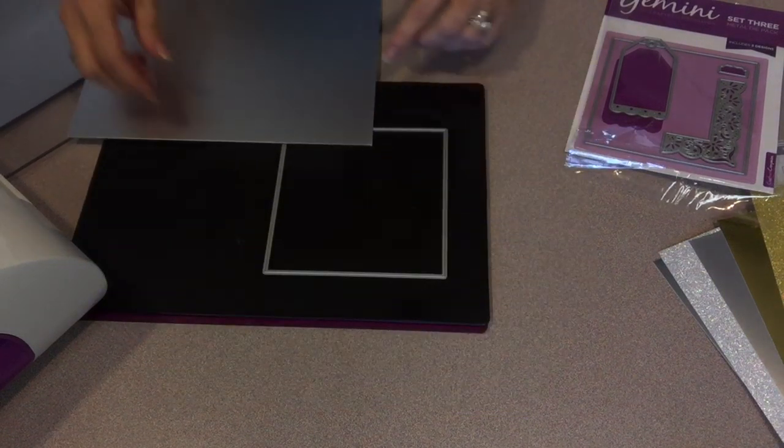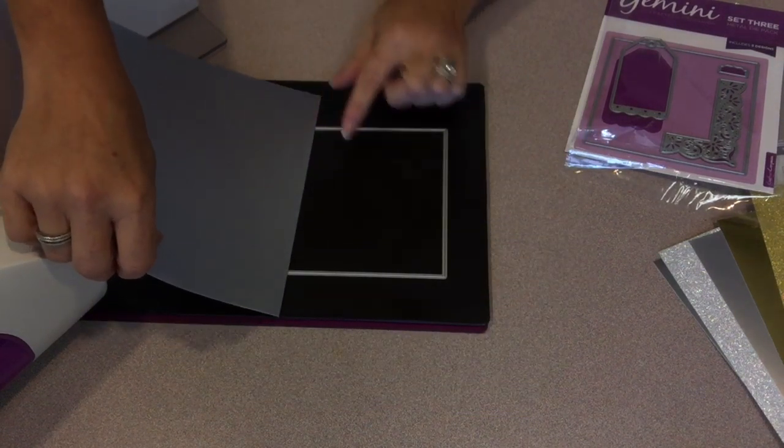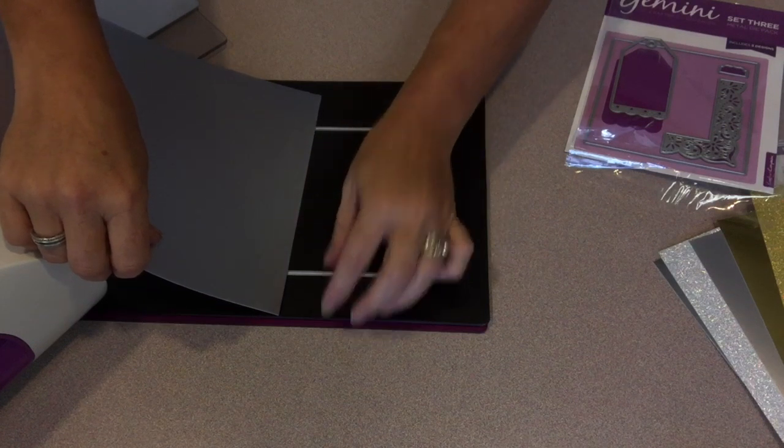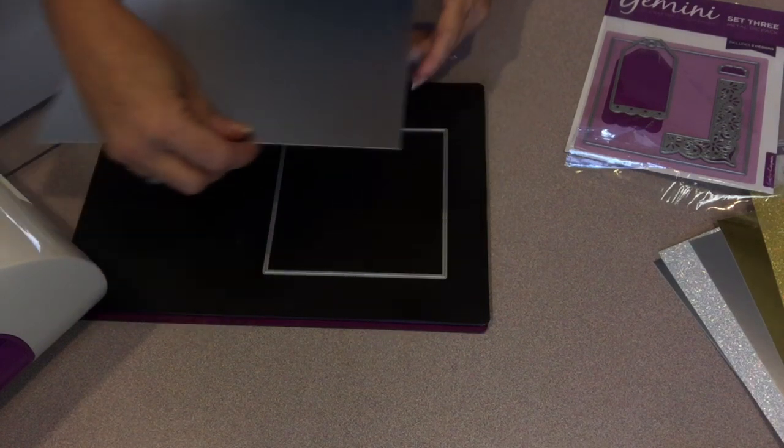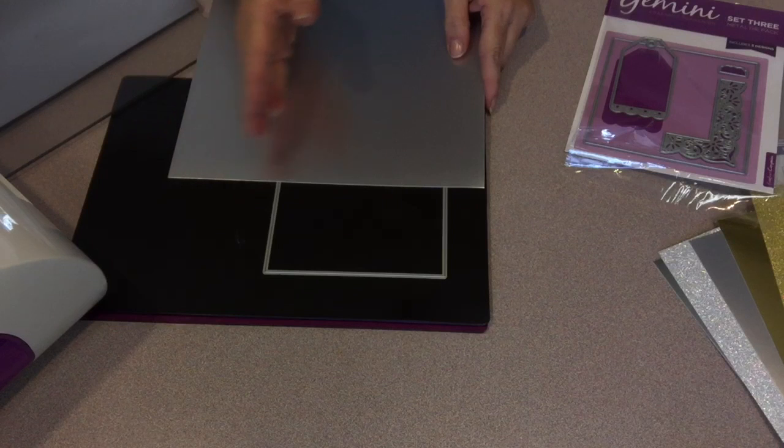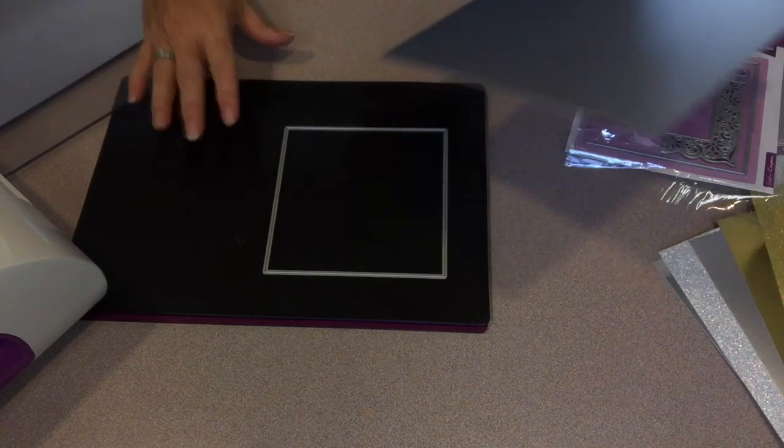Then I determined where I would need to place the die on the magnetic sheet so that it would cut the window where I wanted. I wanted it off-center, not centered.